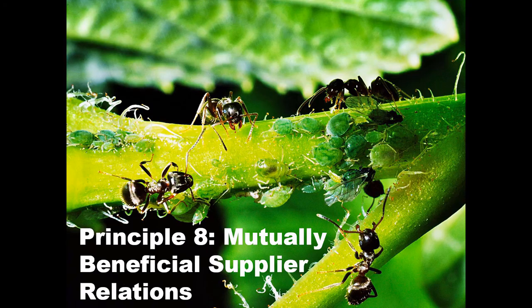The last principle is mutually beneficial supplier relations. This principle deals with the supply chain. It promotes the relationship between the company and its suppliers, recognising its interdependency. A strong relationship enhances productivity and encourages seamless working practices.